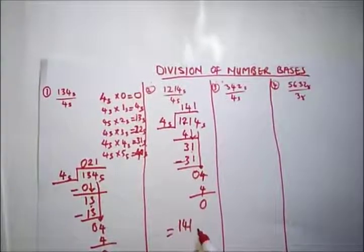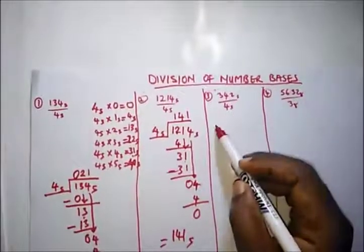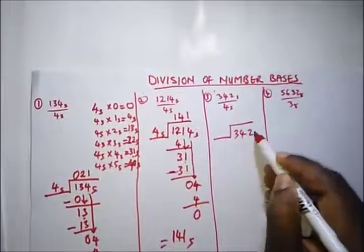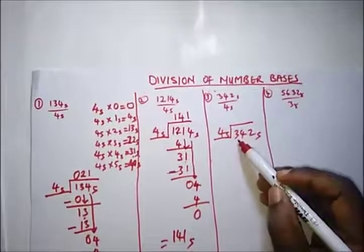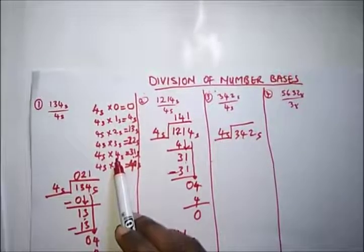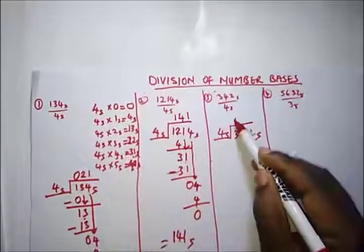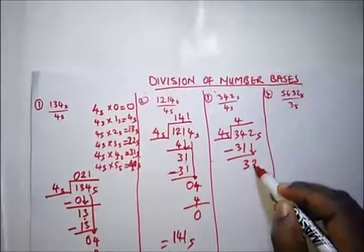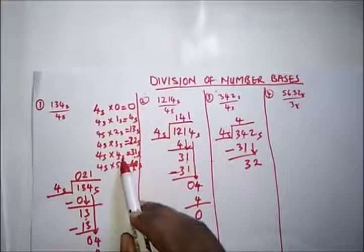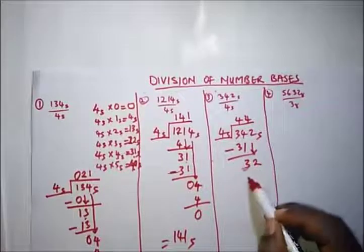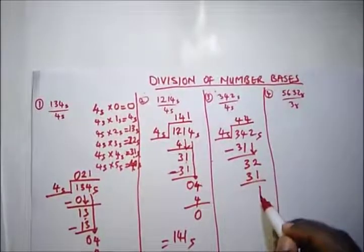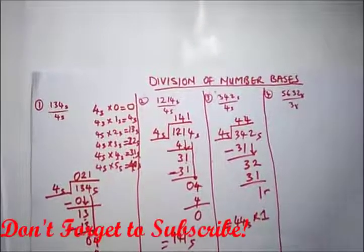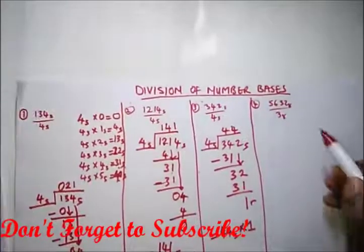Here's another example: 342 base 5 divided by 4 base 5. 4 into 3 won't go. 4 into 34 base 5: our table shows 4 times 4 is 31 and 4 times 5 is 40, so 4 goes 4 times. Subtract 31 from 34, getting 3. Bring down 2, giving 32 base 5. 4 into 32 goes 4 times again — 4 times 4 is 31. Subtract to get remainder 1. Answer is 44 base 5, remainder 1.